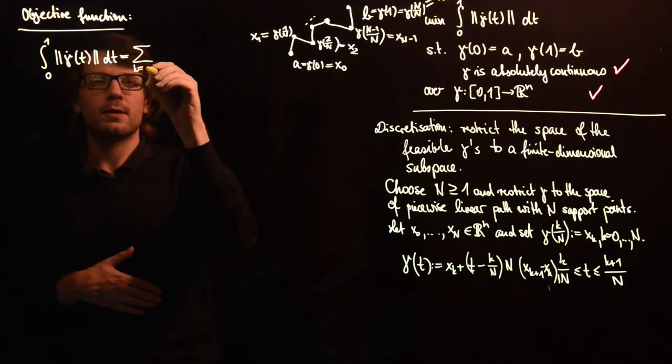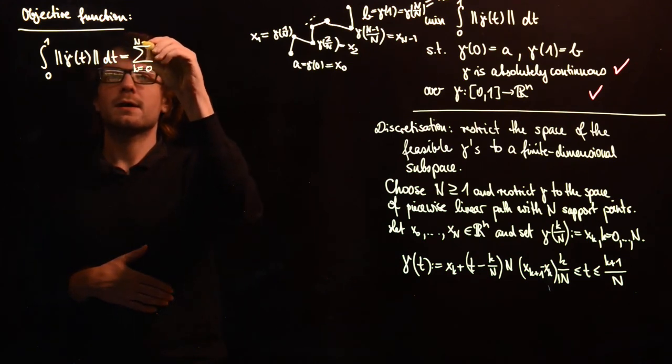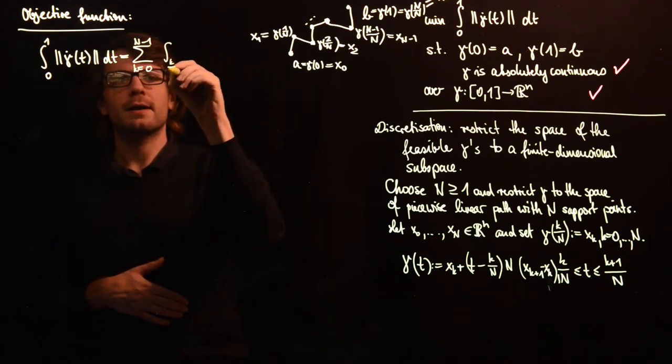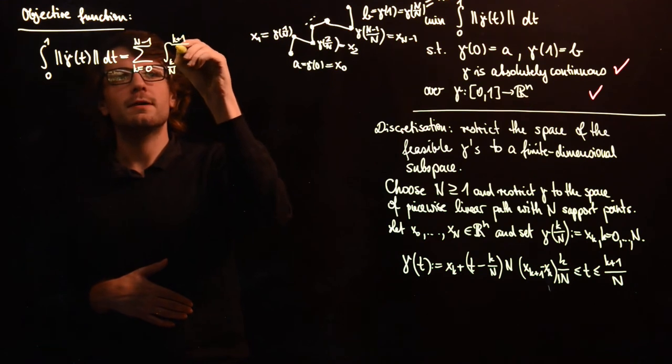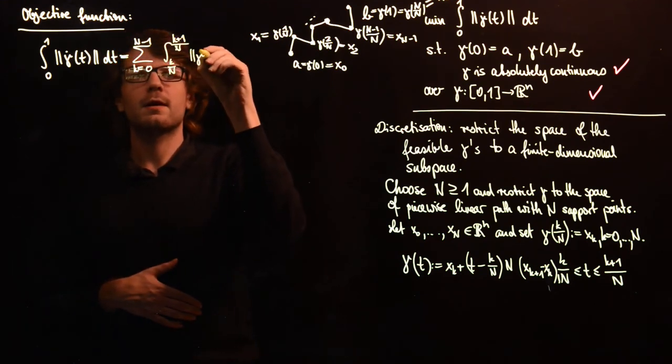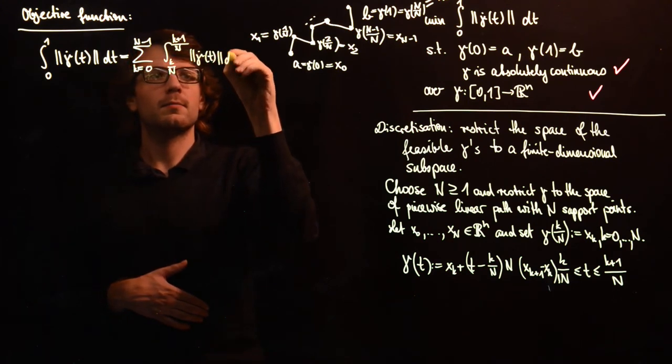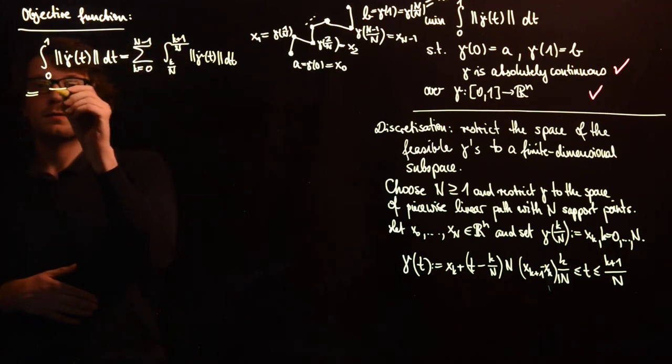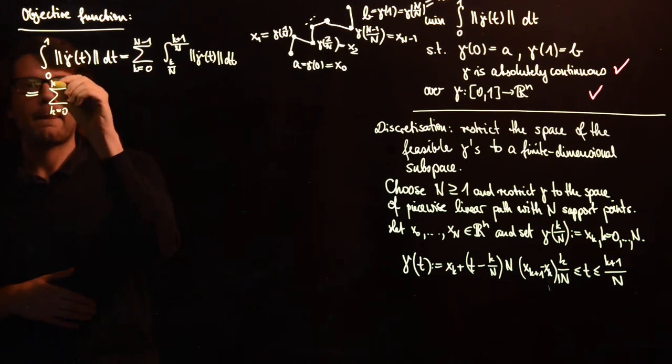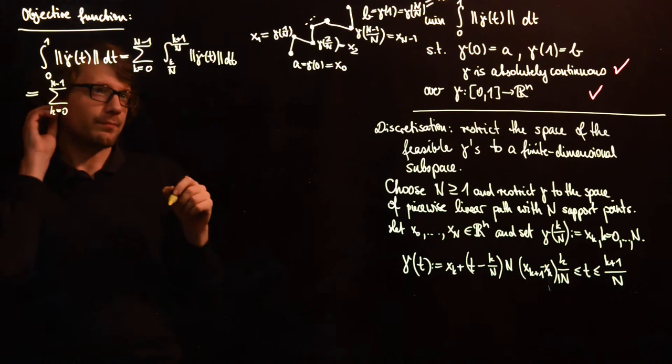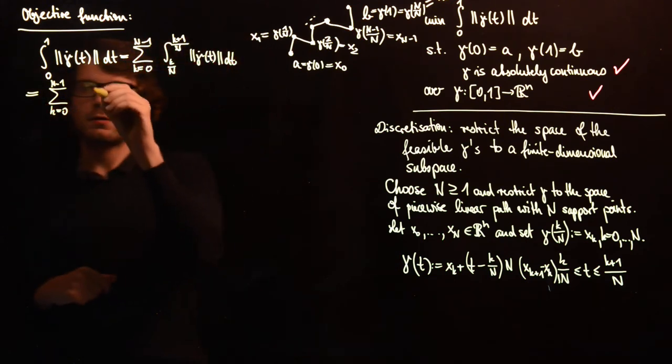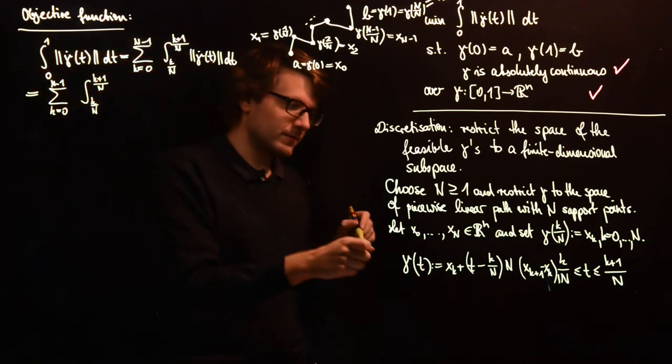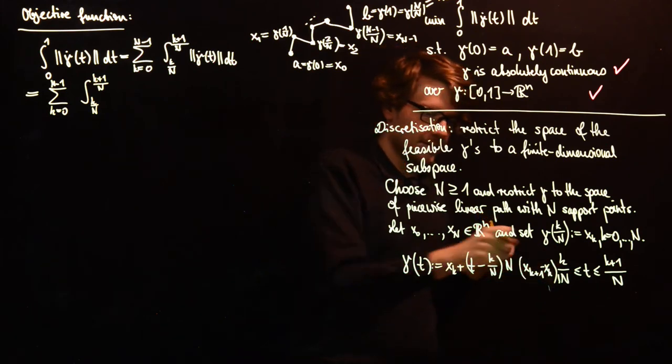From k equals 0 to capital N minus 1, and then we take the integral from k over n to k plus 1 over n of gamma dot of t norm dt. And this is equal to this integral. What is the derivative of gamma in this interval?